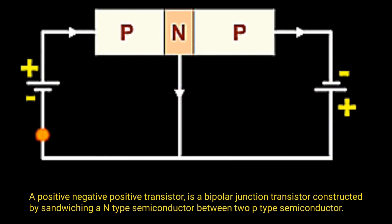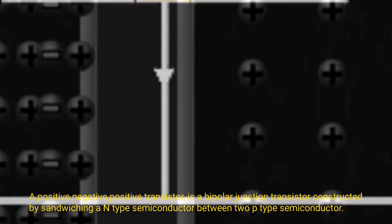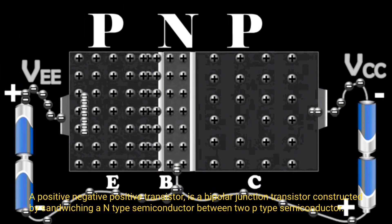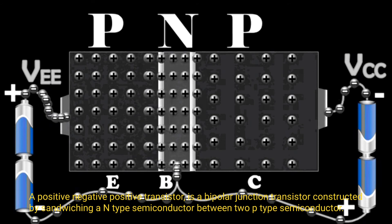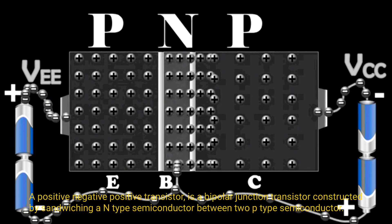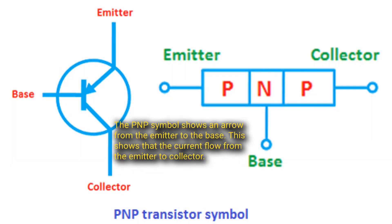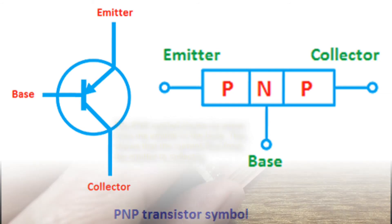PNP transistor: the positive-negative-positive transistor is a bipolar junction transistor constructed by sandwiching an N-type semiconductor between two P-type semiconductors. The PNP symbol shows an arrow from the emitter to the base, indicating that the current flows from emitter to collector.